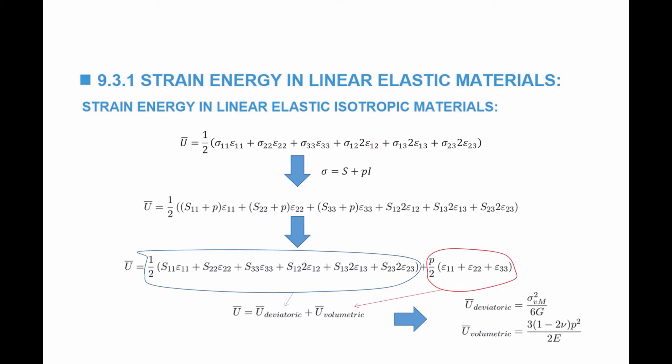By further manipulating these equations and substituting the stress-strain relationship, we find that the deviatoric strain energy equals the von Mises stress squared divided by 6G, while the volumetric strain energy equals 3(1 minus 2ν) divided by 2E, multiplied by the hydrostatic stress squared. The energy responsible for change of shape is a function of σ_vonMises squared, and the energy responsible for change of volume is a function of the hydrostatic stress squared.